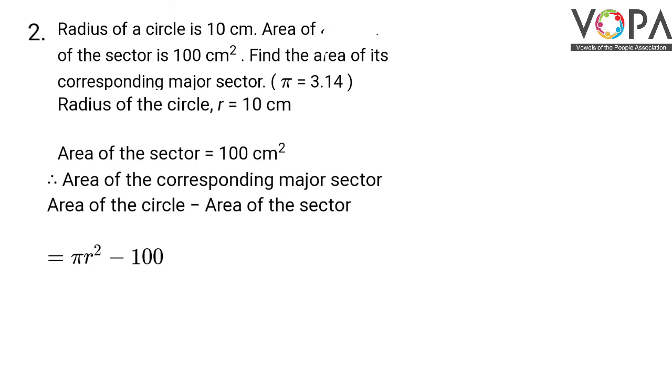So, area of corresponding major sector is equal to area of circle minus area of the minor sector. Area of circle has formula pi R square minus area of the minor sector is given to us as 100.